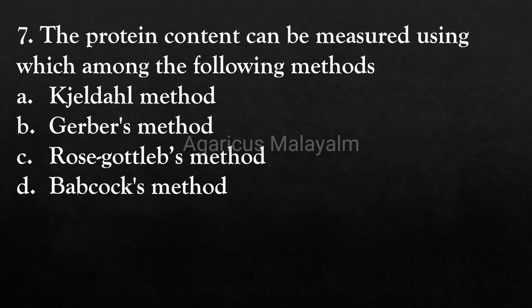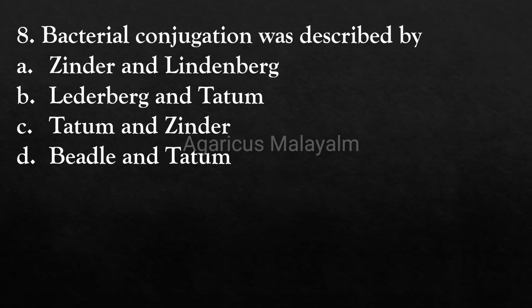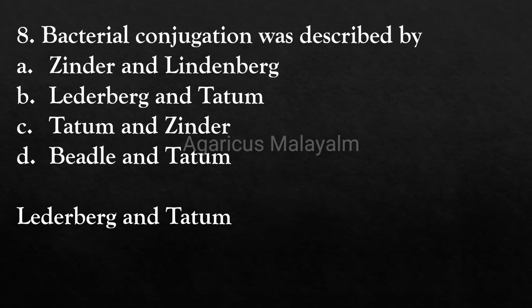Eighth question (important previous year question): Bacterial conjugation was described by which scientists? Answer options: Option A - Zinder and Lederberg, Option B - Lederberg and Tatum, Option C - Tatum and Zinder, Option D - Beadle and Tatum. Correct answer: Option B - Lederberg and Tatum.